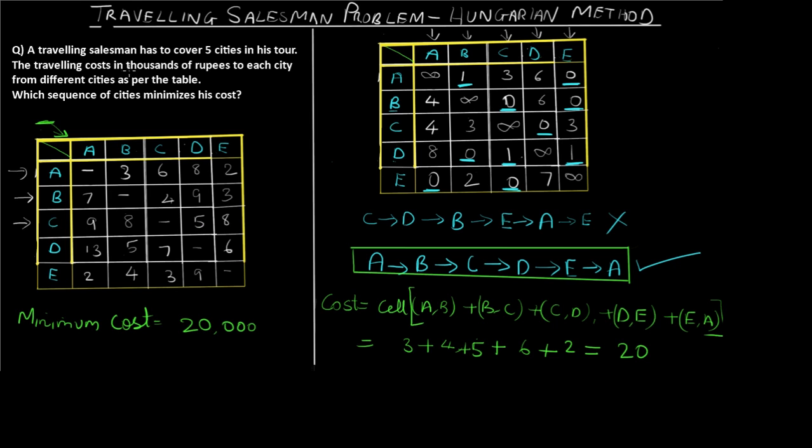The minimum cost is 20,000 rupees since the values are in thousands. This is our final answer, and this is how we solve the Traveling Salesman Problem using the Hungarian method. If you have any queries, put them in the comment section, and make sure you subscribe to our channel. Peace!